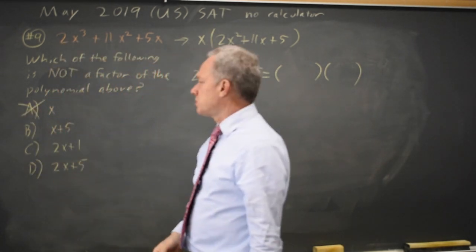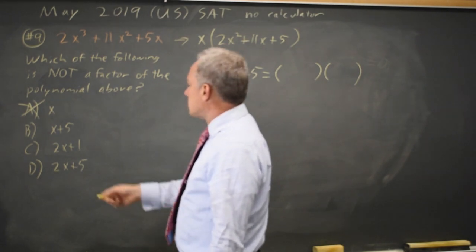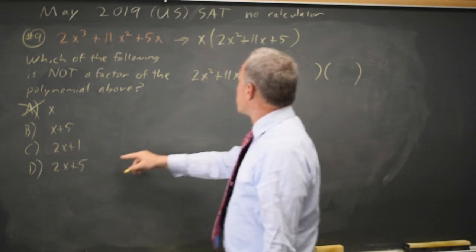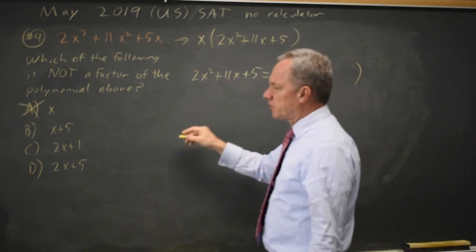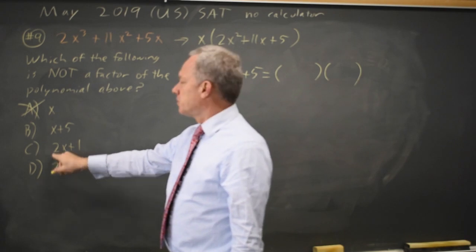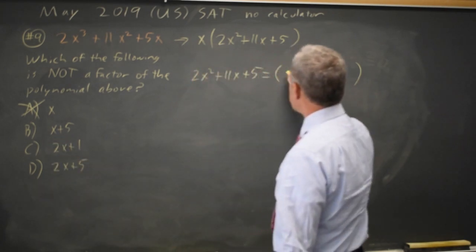One of these three is not, so two of these three are. And since 2x plus 1 times 2x plus 5 will not give me 2x squared plus 11x plus 5, because it will start with 4x squared, x plus 5 has to be one of my factors.